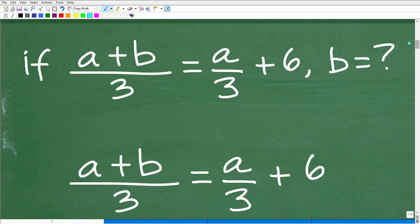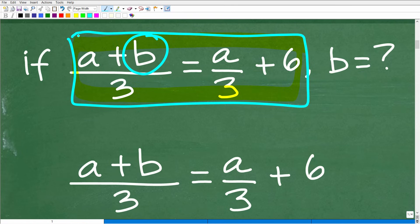So here we have an if statement. Don't let this kind of confuse you. What we really have is this equation. So we have this equation, a plus b over 3 is equal to a over 3 plus 6. And we're looking to solve for the variable b here, right? So that's the objective. So solve this equation for b. So don't let this if thing kind of confuse you.